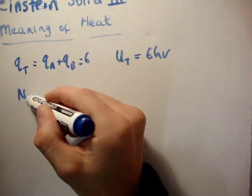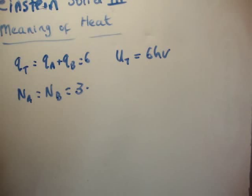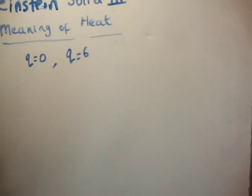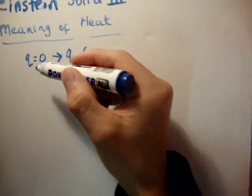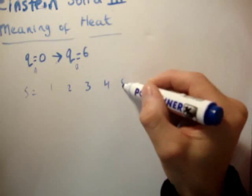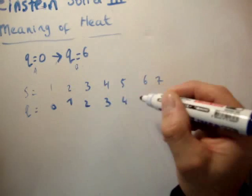Let's say there are the same number of oscillators in each solid — three oscillators per solid, so three atoms each with one oscillator. Since Q_A can range from 0 to 6, there are seven possible macrostates for the system, corresponding to Q_A equals 0, 1, 2, 3, 4, 5, or 6. And U = Q·h·nu for each macrostate.